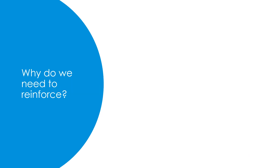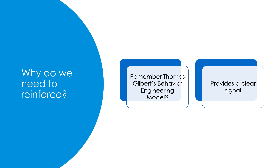Why do we need to reinforce? First, remember Thomas Gilbert's behavior engineering model — if you haven't watched that video of mine, you may want to take a look at that. In order for any behavior to occur, the person has to know what they're supposed to do, they have to have the skills to do it, and they have to want to do it. We need to realize that not everybody wants to do the things that we would like them to do. Therefore, we need to reinforce them — we need to give them a reason to do it.